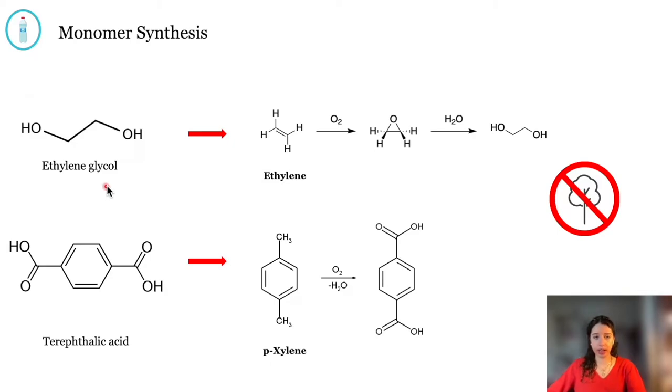In the case of ethylene glycol, it's usually formed from the epoxidation of ethylene, and this epoxide will later be hydrolyzed, which will form the product that we need to use in industry.